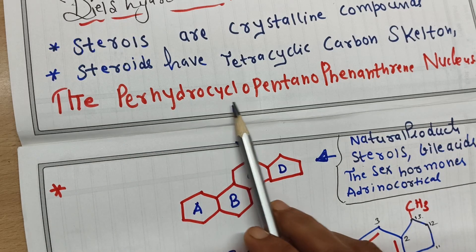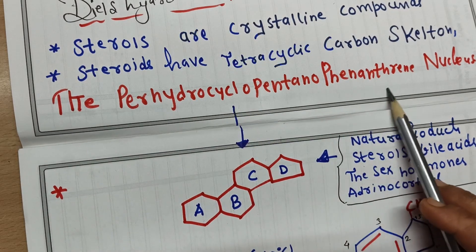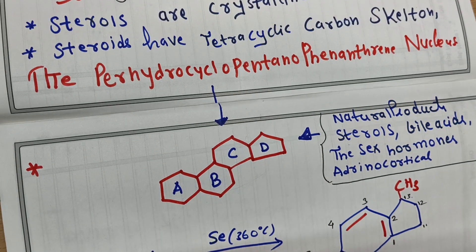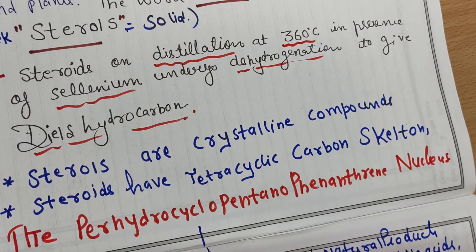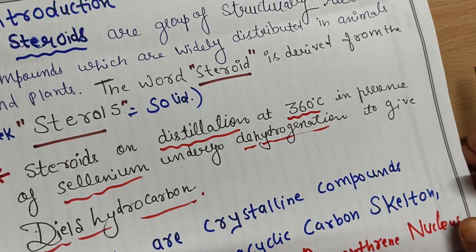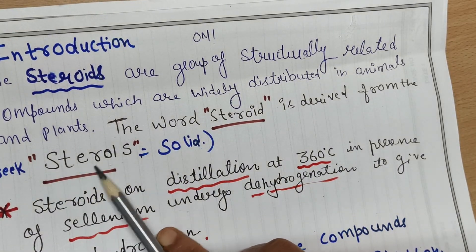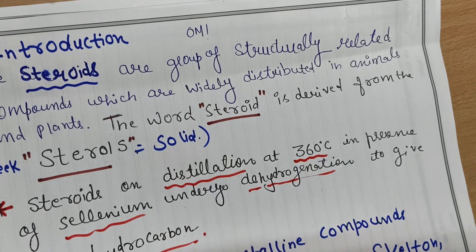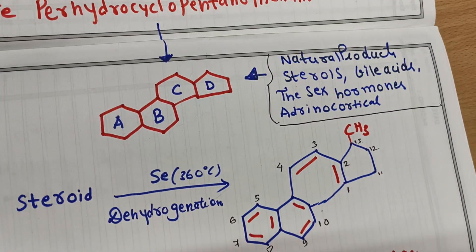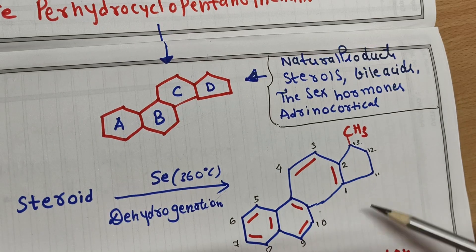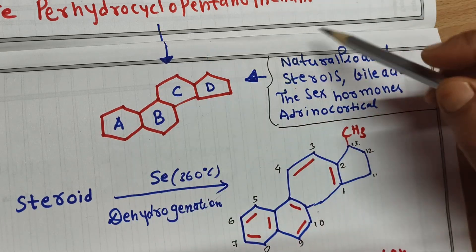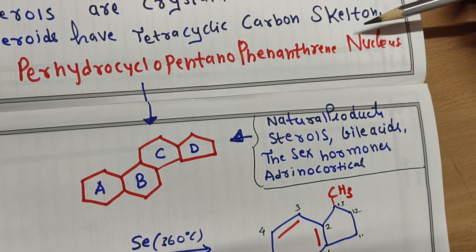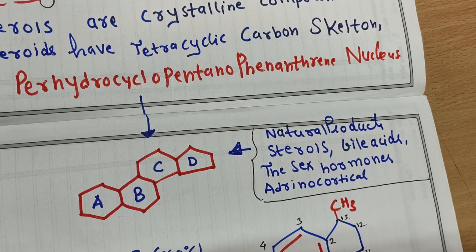Steroids are crystalline compounds with a tetracyclic carbon skeleton, and the perhydrocyclopentanophenanthrene nucleus is present in all steroids. To summarize: steroids are structural compounds widely distributed in nature, derived from the word 'sterol', giving Diels' hydrocarbon on distillation, and possessing the tetracyclic A, B, C, D ring skeleton.